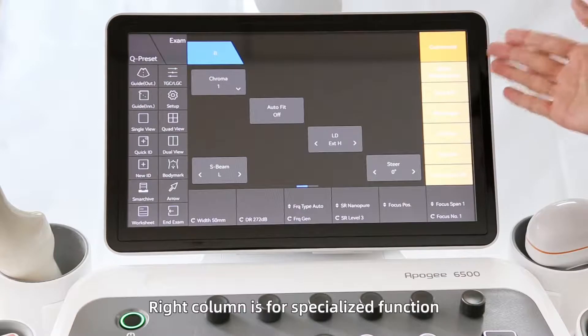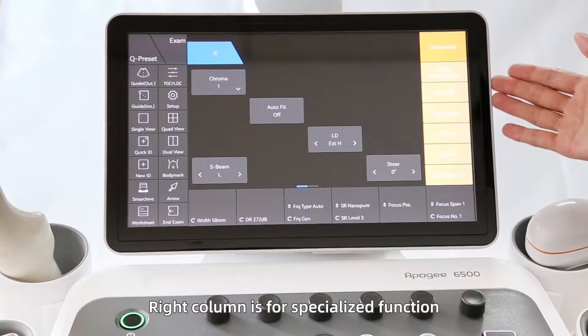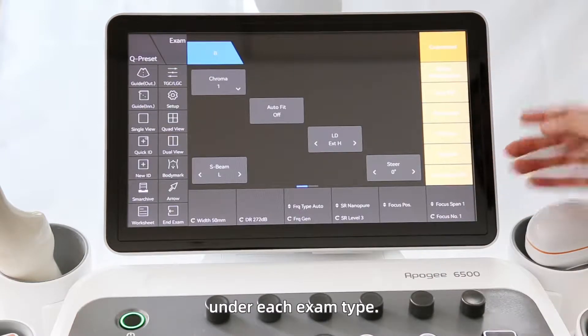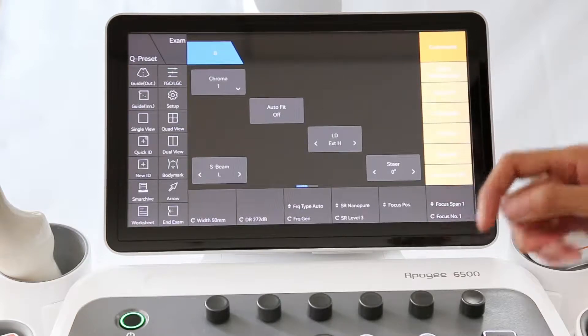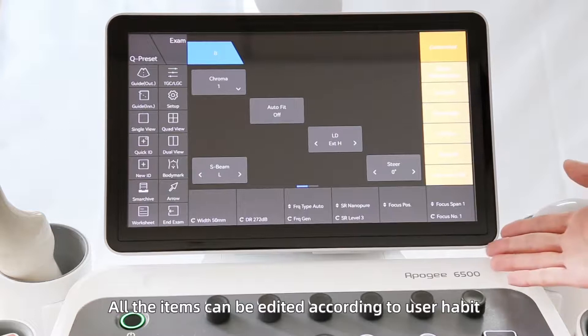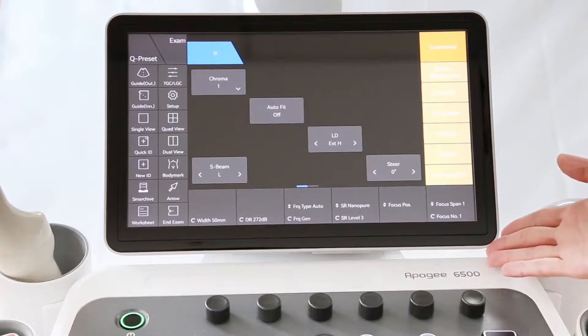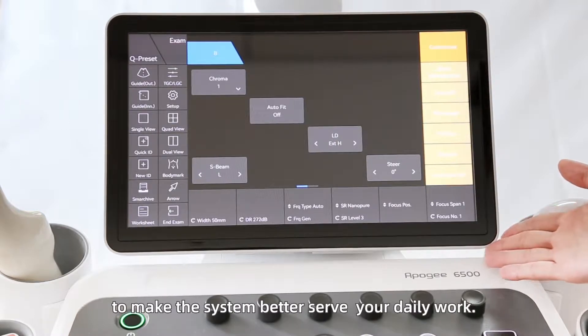Right column is for specialized function under each exam type. All the items can be edited according to user habit to make the system better serve your daily work.